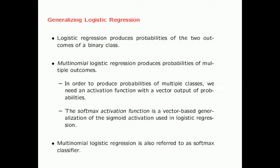Logistic regression is a probabilistic model that produces probabilities of the two outcomes of a binary class. Multinomial logistic regression is a generalization of this concept — it produces probabilities of multiple outcomes. In order to produce probabilities of multiple outcomes, we need an activation function with a vector output of probabilities. The softmax activation function is a vector-based generalization of the sigmoid activation function used in logistic regression, which is one reason why multinomial logistic regression is also referred to as the softmax classifier.